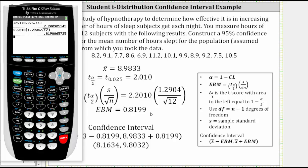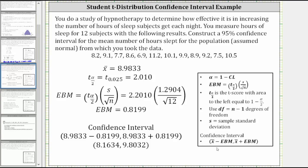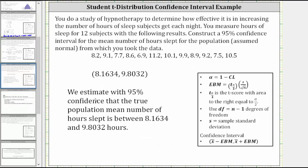To four decimal places, we are correct. And now we can find the confidence interval given by x̄ minus the error bound to x̄ plus the error bound, which gives us 8.9833 minus 0.8199 to 8.9833 plus 0.8199, which gives the confidence interval of 8.1634 to 9.8032. Which means we estimate with 95% confidence that the true population mean number of hours slept is between 8.1634 and 9.8032 hours.